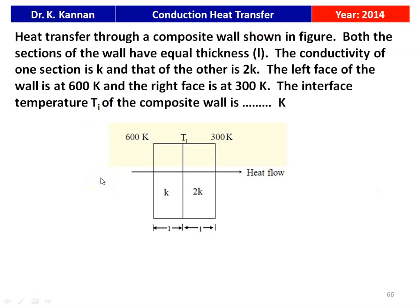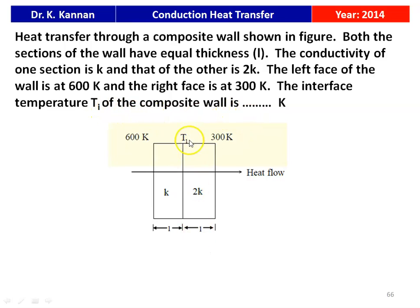The next question is again from the 2014 question paper. Heat transfer through a composite wall is shown; both sections have equal thickness L. The conductivity of one section is K and the other is 2K. The left face is at 600 K and the right face is at 300 K. The interface temperature T_i of the composite wall is 400 Kelvin.